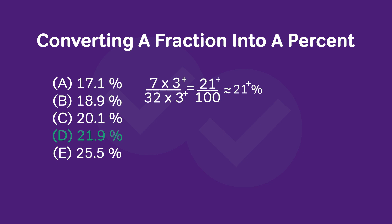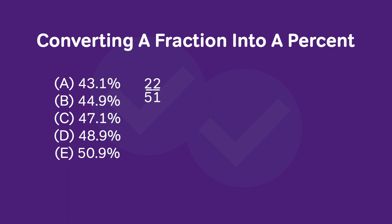Let's try another example. Let's convert this fraction to a percent. We want to rewrite this fraction as a new fraction with denominator 100. To do this, we must multiply 51 by approximately 2. Now 51 times 2 is greater than 100 — 51 times 2 equals 102. So we want to multiply 51 by a number slightly less than 2. We'll use this notation.